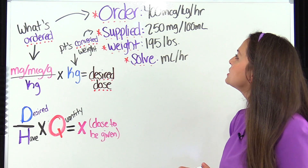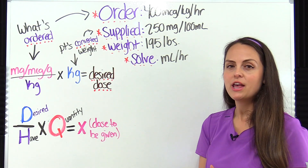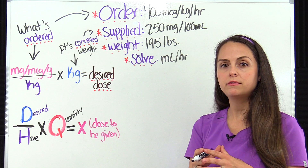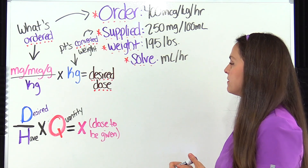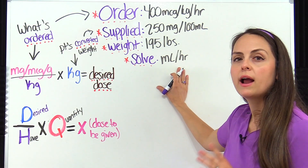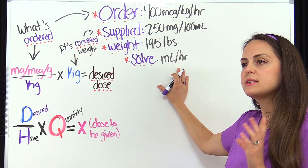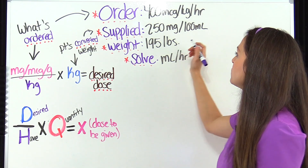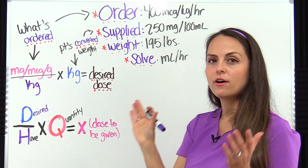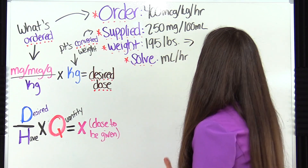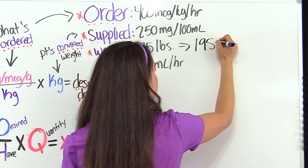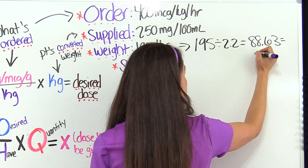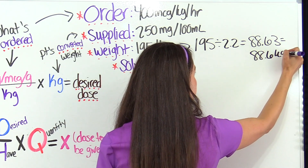This problem says the physician has ordered 400 micrograms per kilogram per hour — so we're dealing with an IV infusion problem. We're supplied with a medication bag labeled 250 milligrams per 100 mLs. Our patient weighs 195 pounds, and we need to solve for how many milliliters per hour to give. Let's convert the patient's weight: 195 divided by 2.2 gives us 88.63, which rounds to 88.6 kilograms.